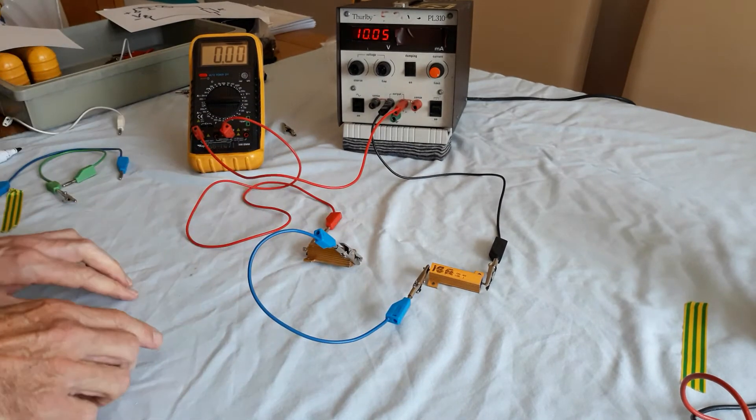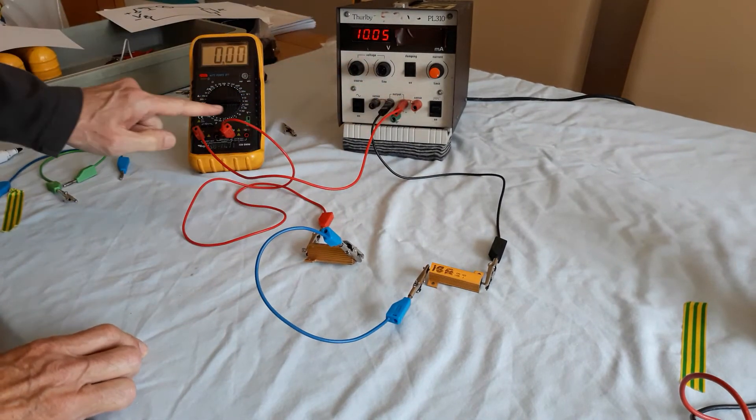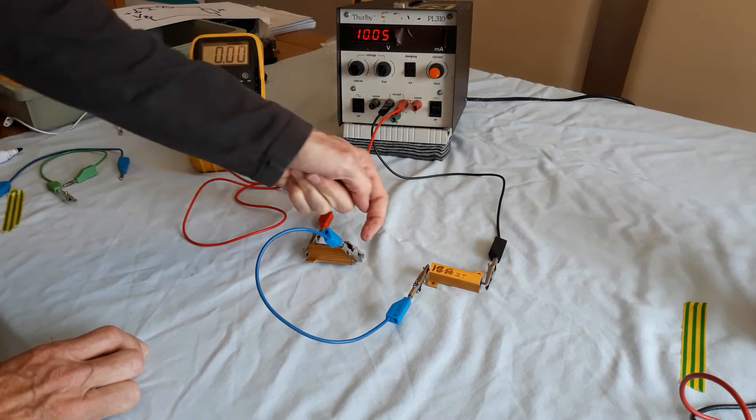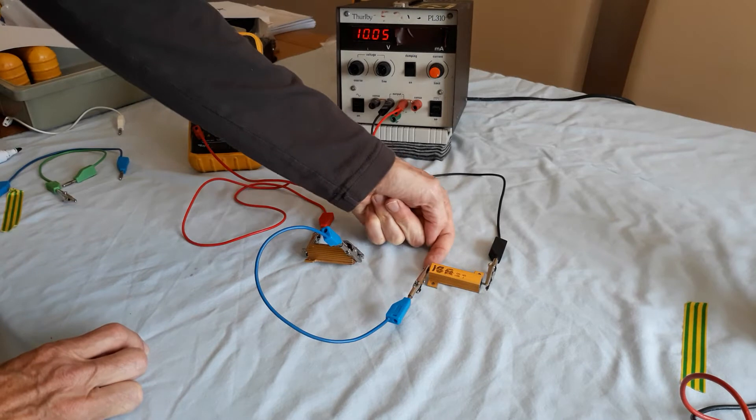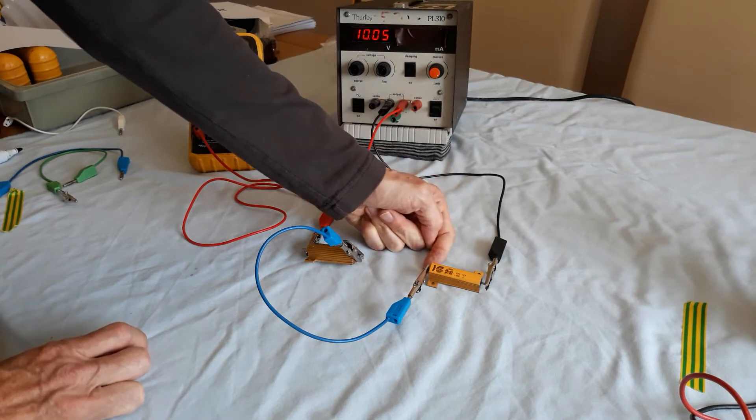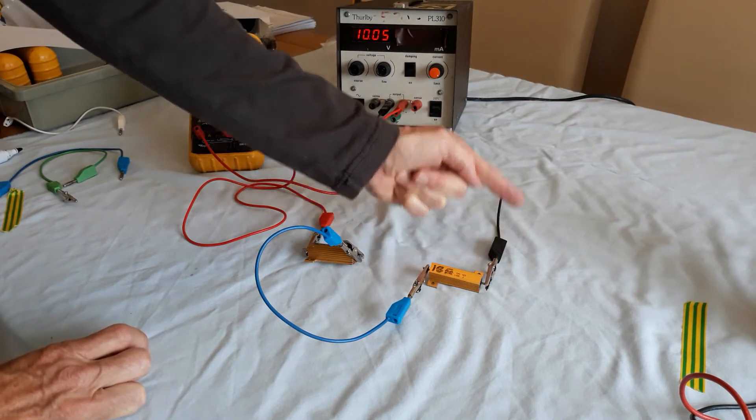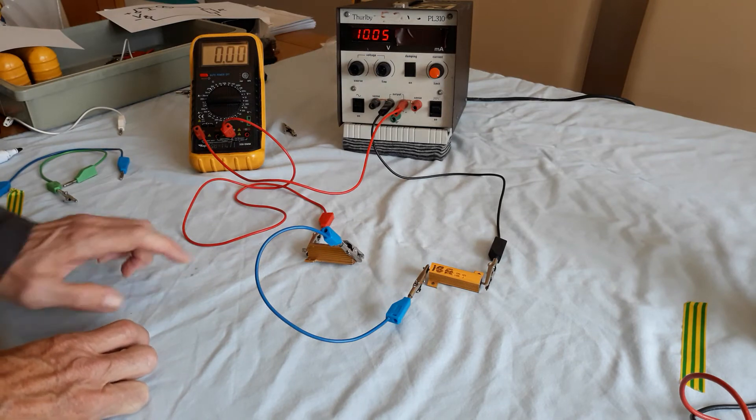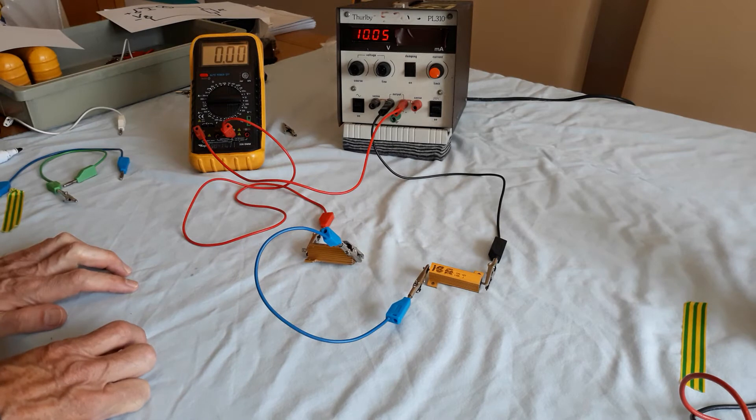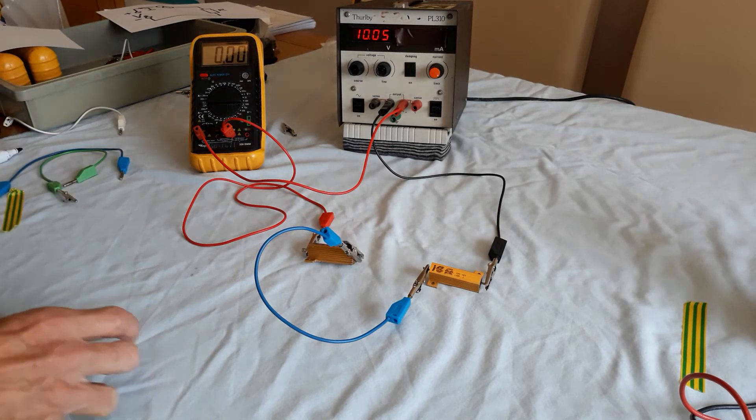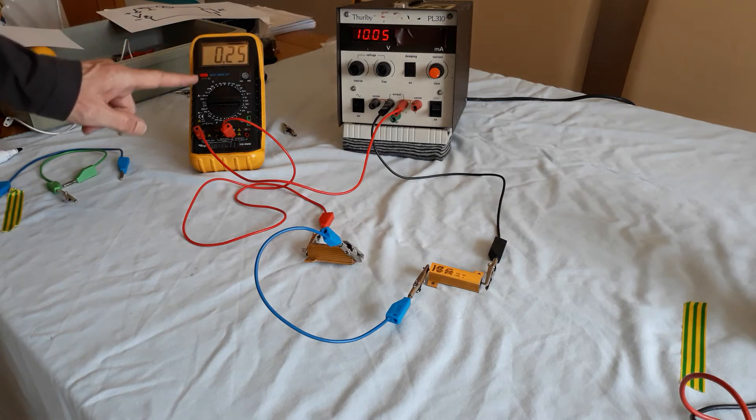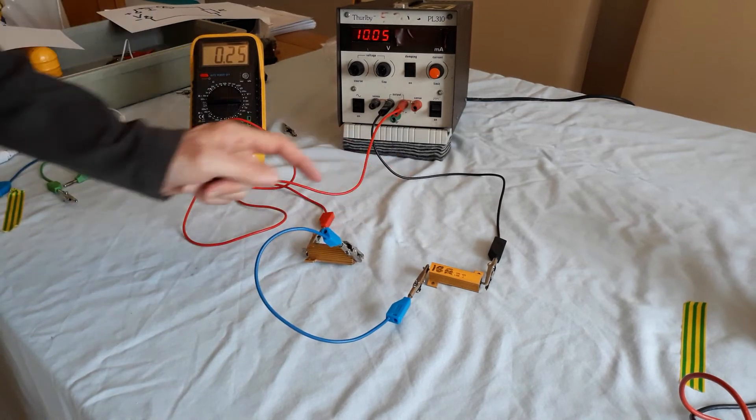Okay, so we now have from the power supply into the ammeter, out of the ammeter to the first resistor, out of the first resistor to the start of the second resistor, and then from the second resistor back to the supply. So it's a complete circuit, but I've now increased the resistance. So what should happen to the current? I haven't changed the pressure, the voltage, but the current has gone down. Increasing the amount of resistance in a circuit reduces the current flow.